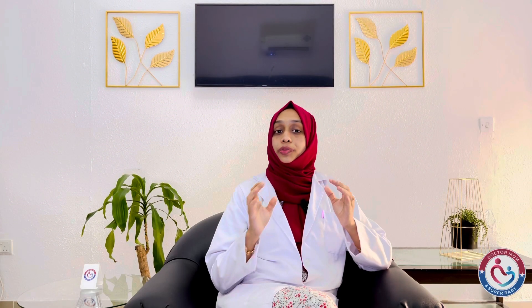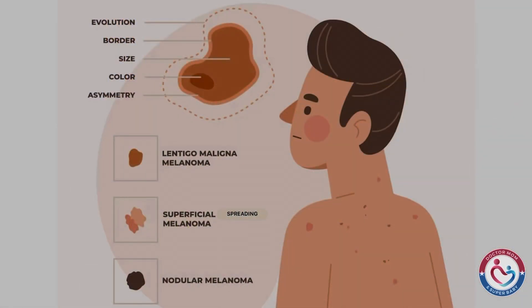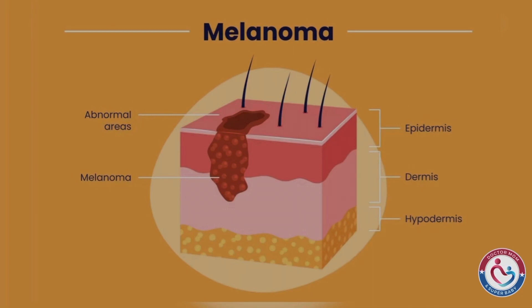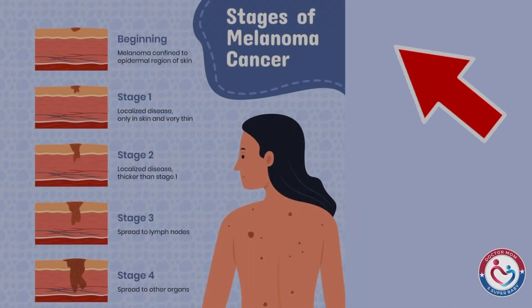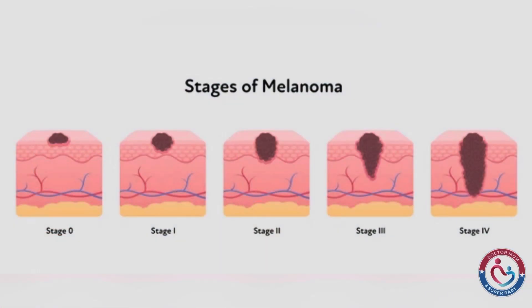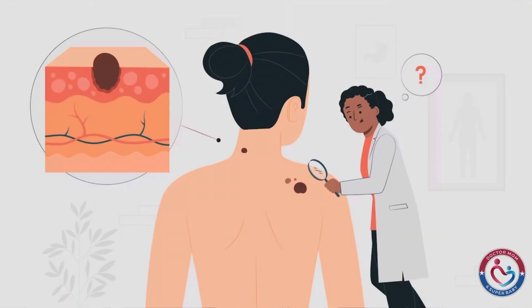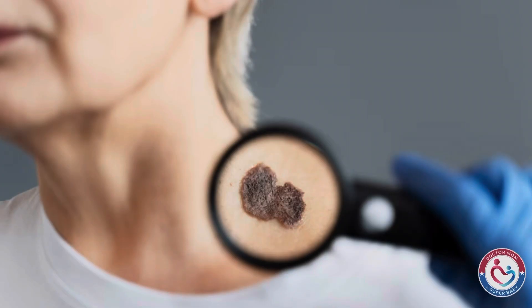Melanoma has different stages and different types. It can begin from the epidermis of the skin and transmit to other body parts. Sometimes people will think that their mole is completely normal and only identify it as cancerous in the later stages.